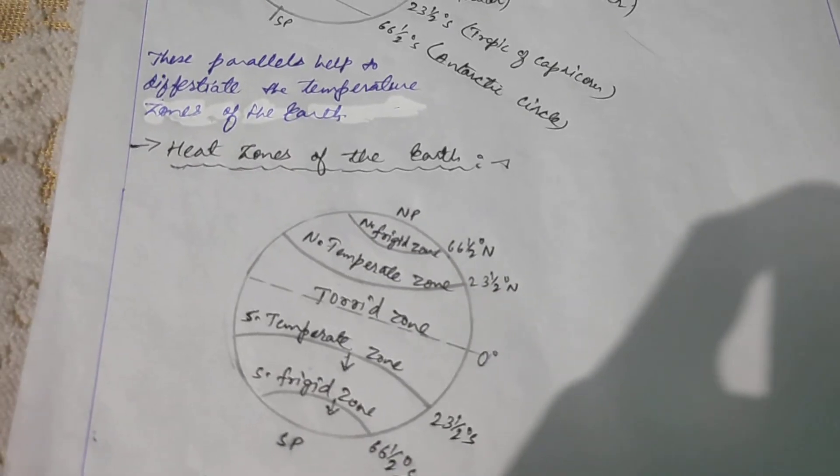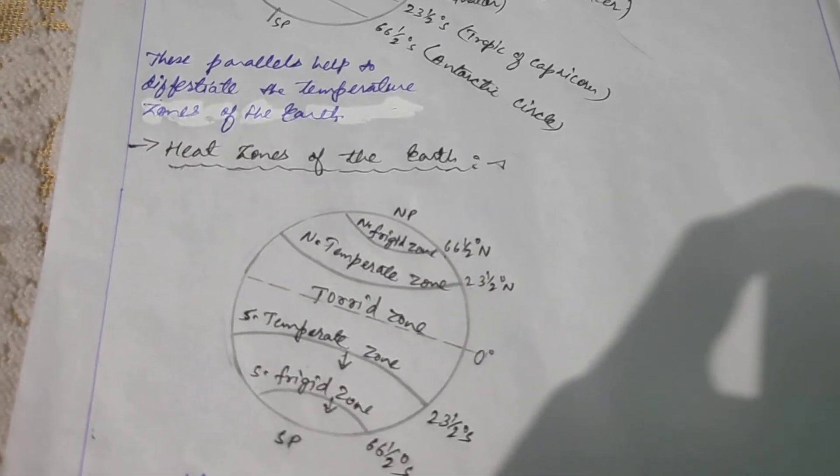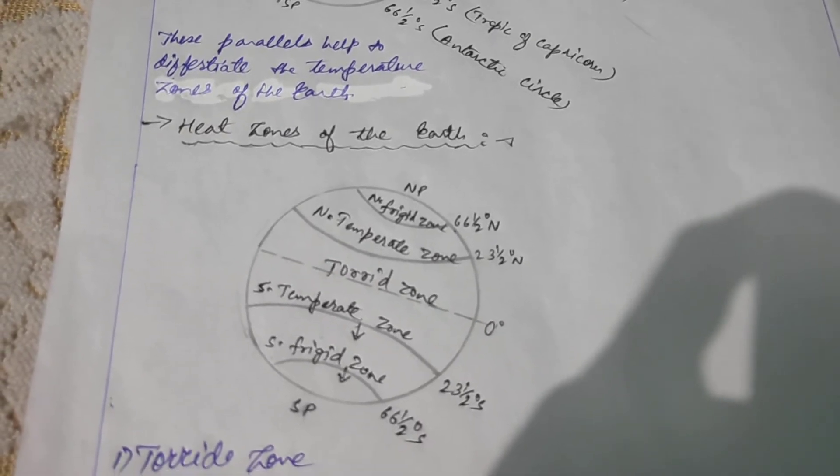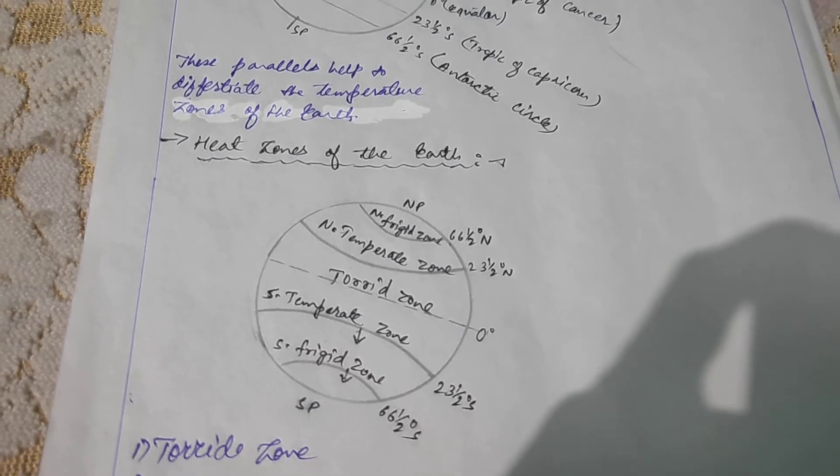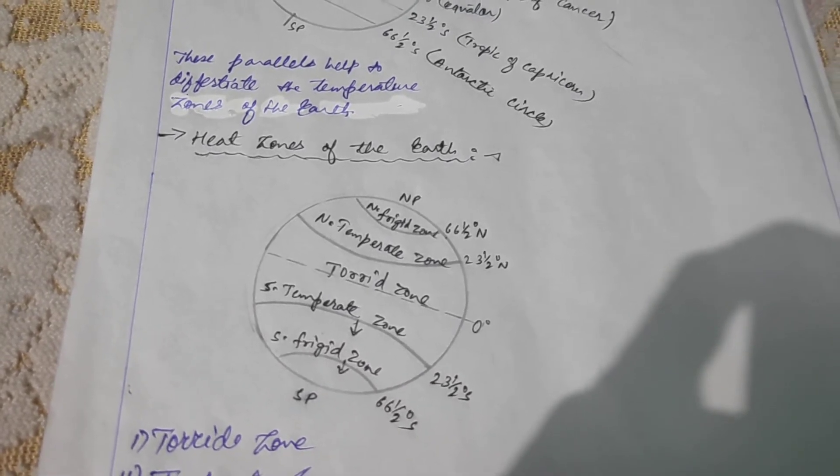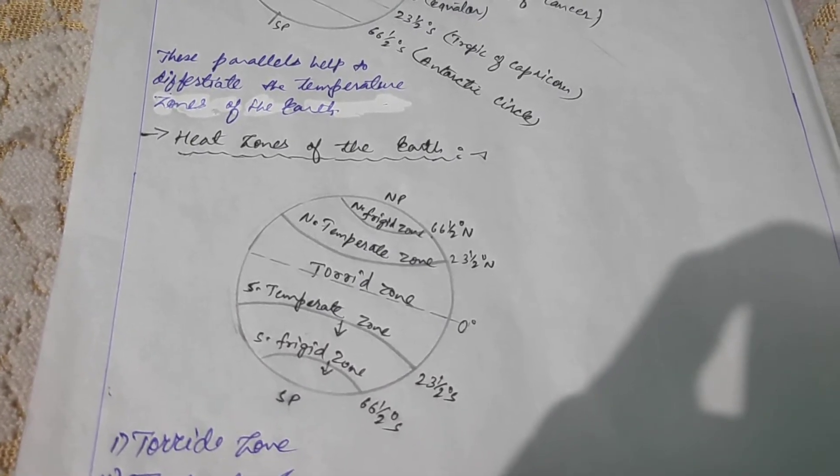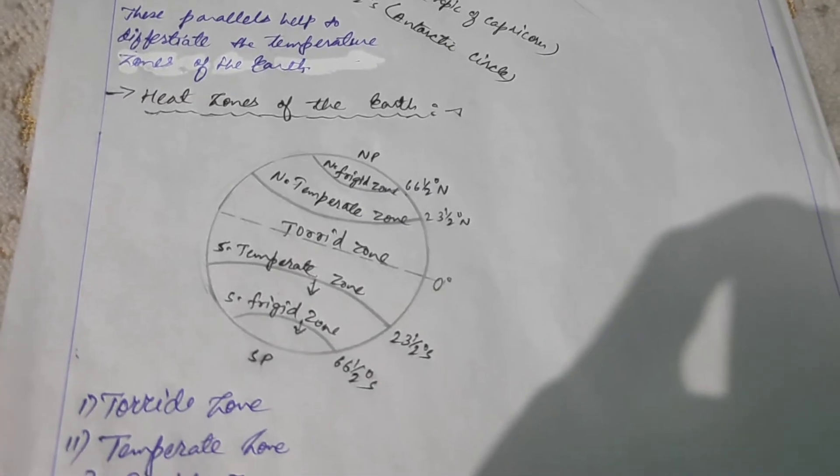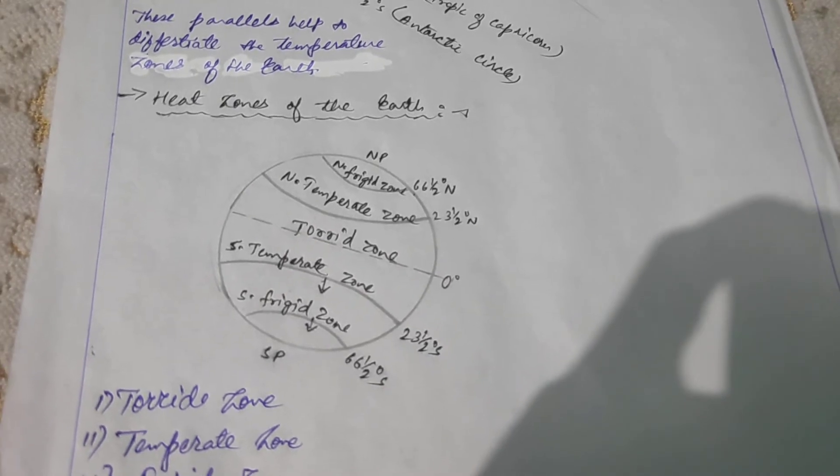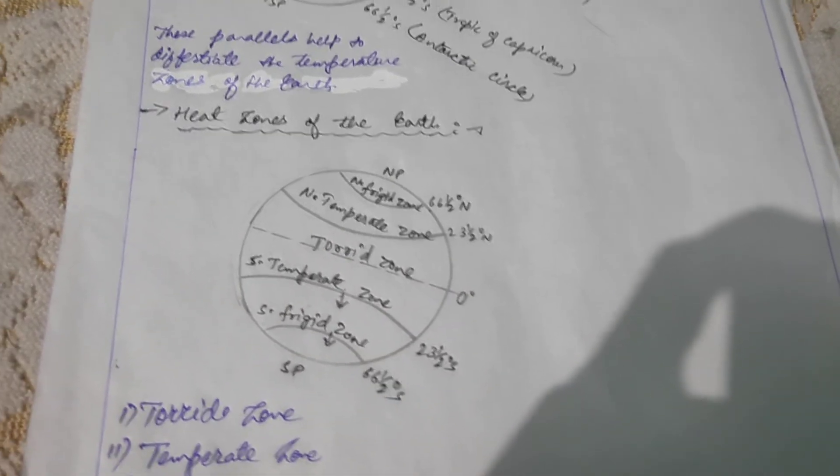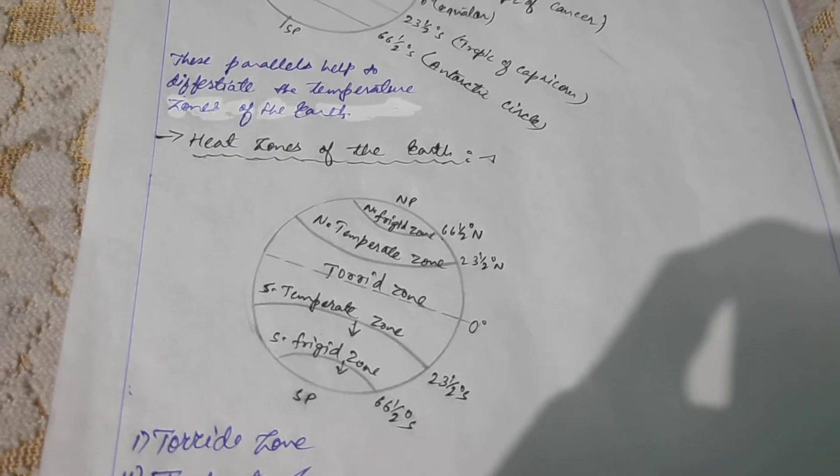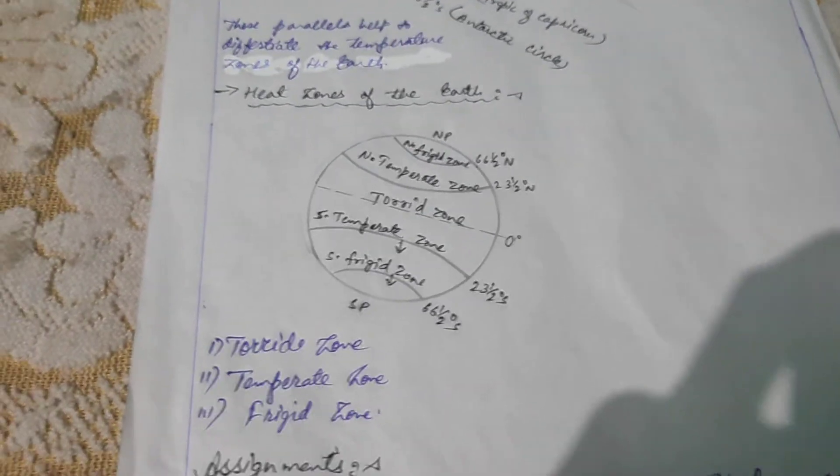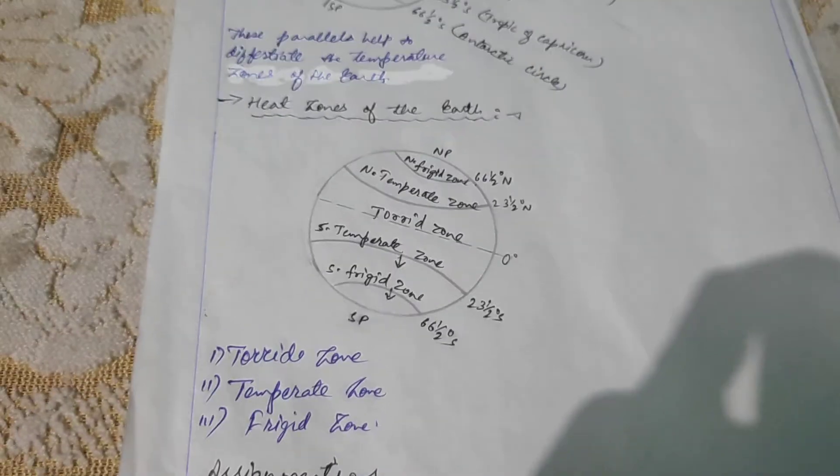Due to the tilted nature of the earth axis, there is an unequal distribution of heat or solar energy on the surface of the earth. The amount of heat a place gets depends on the angle of intonation of the sun's rays at that point. Based on the amount of solar energy received, each hemisphere is divided into three temperature or heat zones: the torrid zone, the temperate zone and the frigid zone.